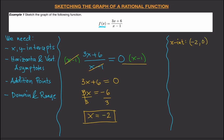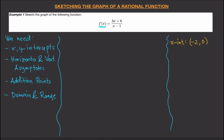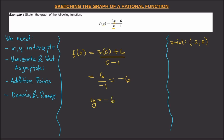For the y-intercept, the x-coordinate is zero, so we substitute x = 0: f(0) = (3·0 + 6)/(0 − 1) = 6/(−1) = −6. So the y-intercept is (0, −6).